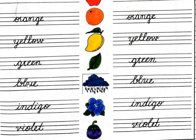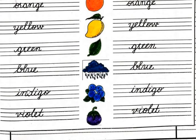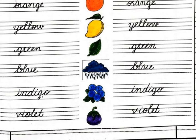Number 5: Blue — B, L, U, E — blue. Number 6: Indigo — I, N, D, I, G, O — indigo.